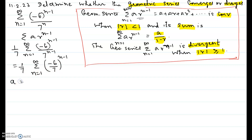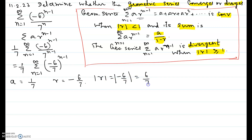This now looks like a times r to the n minus 1 form, where a is the starting term 1 over 7 and the common ratio r is negative 6 over 7. Taking the absolute value of r gives 6 over 7, which is less than 1, so this geometric series converges.